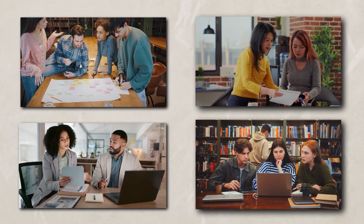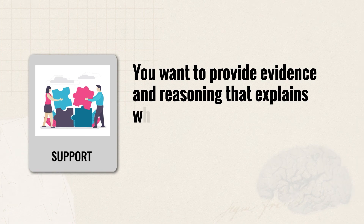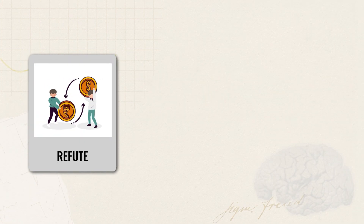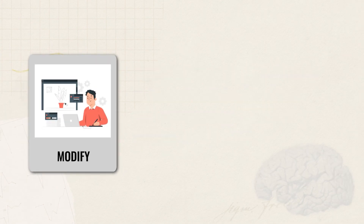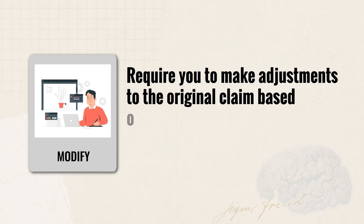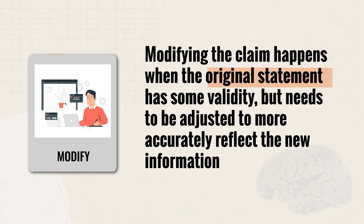It is also important to make sure the evidence from the study can be replicated. The more other researchers can repeat the experiment and obtain similar results, the more reliable that evidence is. You could also check whether the findings are consistent with other established scientific theories and knowledge. Once you have reliable evidence, the next step is to use it to either support, refute, or modify a claim. When you support a claim, you provide evidence and reasoning explaining why the claim should be upheld. When you refute a claim, you provide evidence that contradicts it and shows why it should be rejected. When you modify a claim, you make adjustments to the original claim based on new evidence — this happens when the original statement has some validity but needs to be adjusted to more accurately reflect new information.